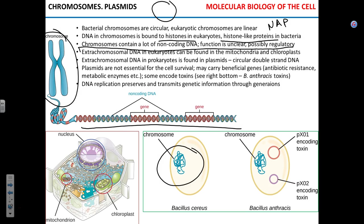Chromosomes contain a lot of non-coding DNA — especially eukaryotic DNA contains a lot of what we call junk DNA. What percentage of junk DNA is in the human genome? Often students hesitate to go above 50%, but it's 90%. Ninety percent of DNA in the human genome does not encode for anything.